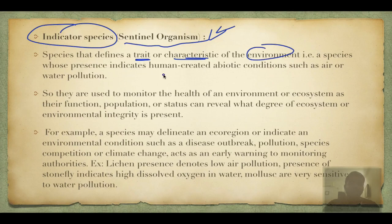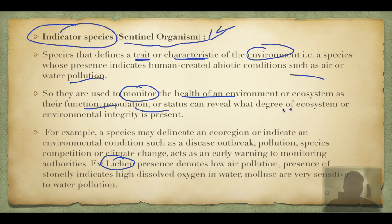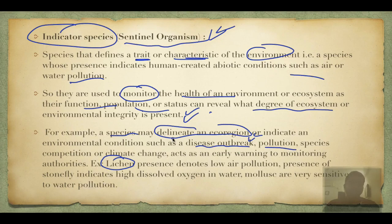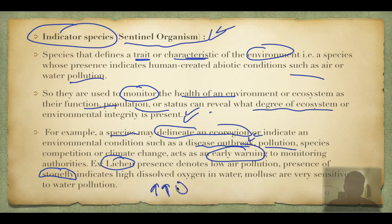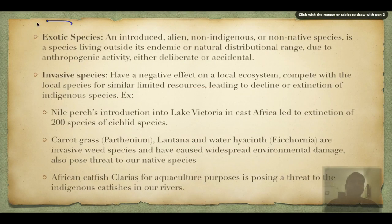Indicator species, also called sentinel organisms, indicate a trait or characteristic of the environment — for example, air or water pollution. The most important indicator species is lichen, used to monitor environmental health. A species can delineate an ecoregion or indicate disease outbreaks or pollution. Lichen cannot survive in air pollution — if lichen is present, air is free of pollution. Similarly, the presence of stonefly indicates very high oxygen concentration and unpolluted water, as it is extremely sensitive to water pollution.